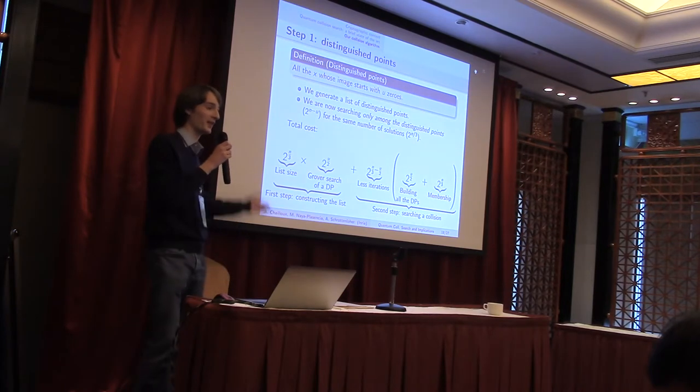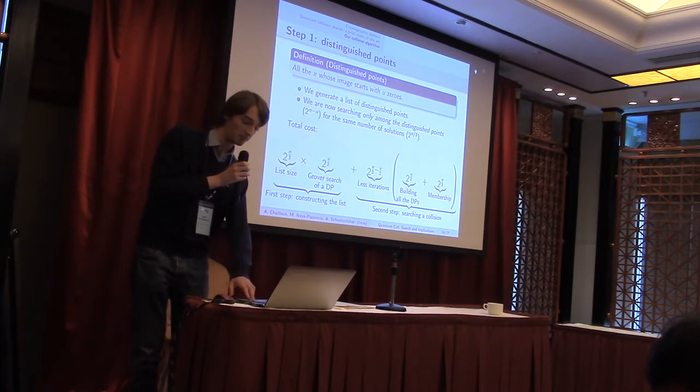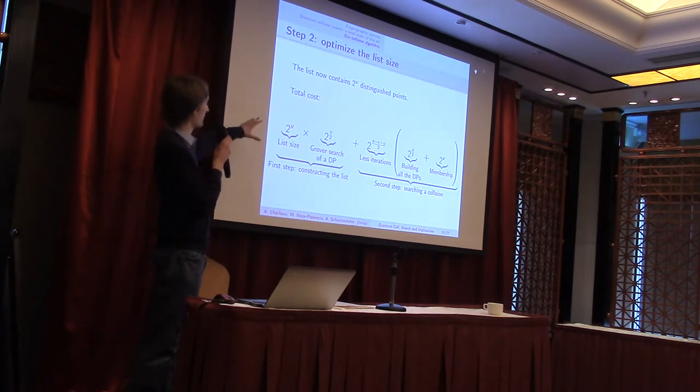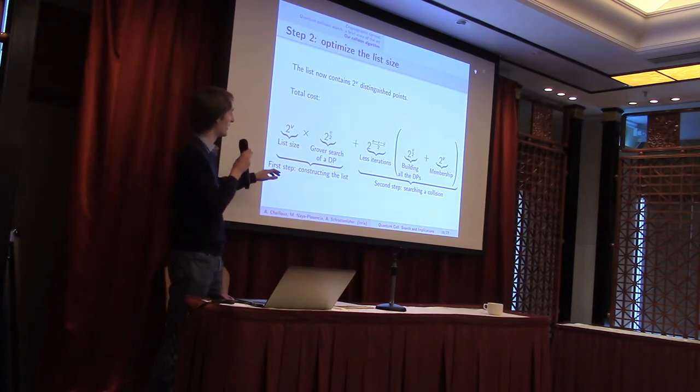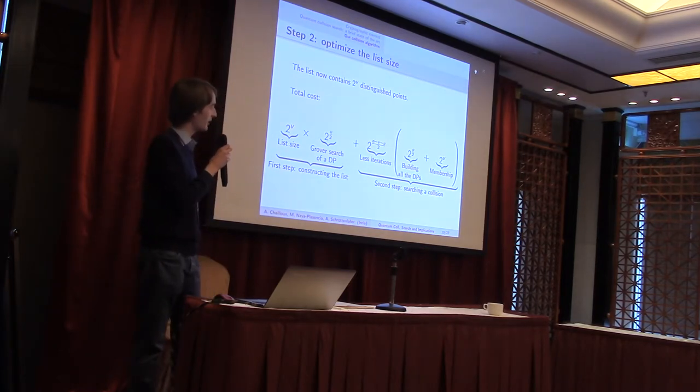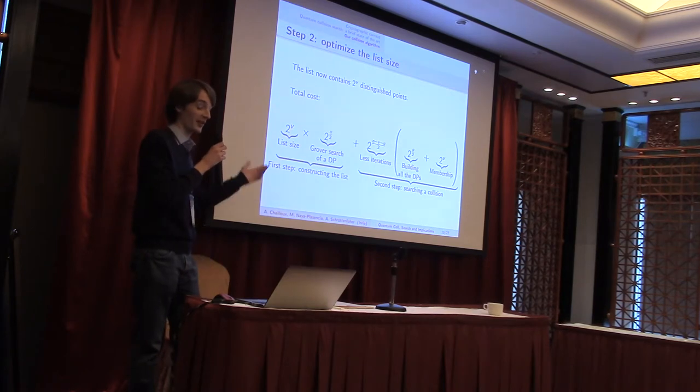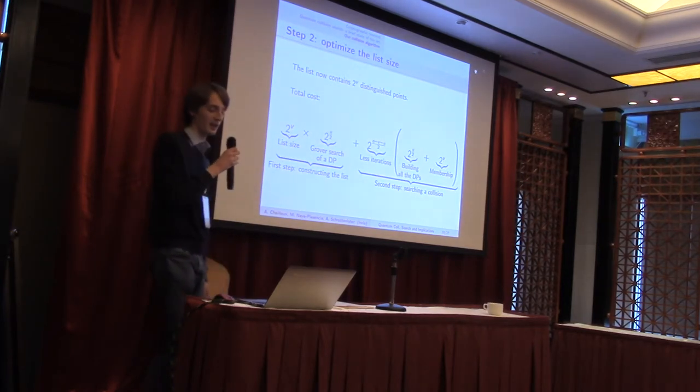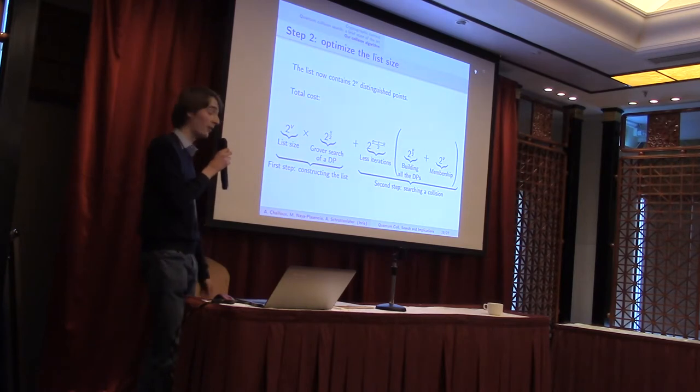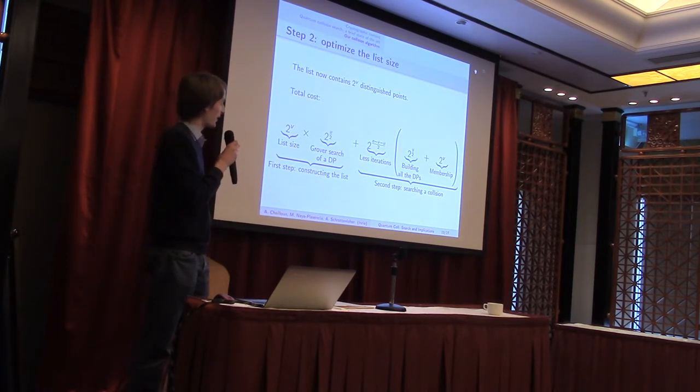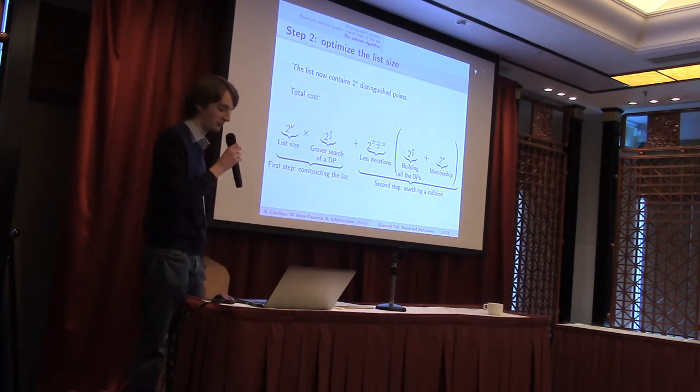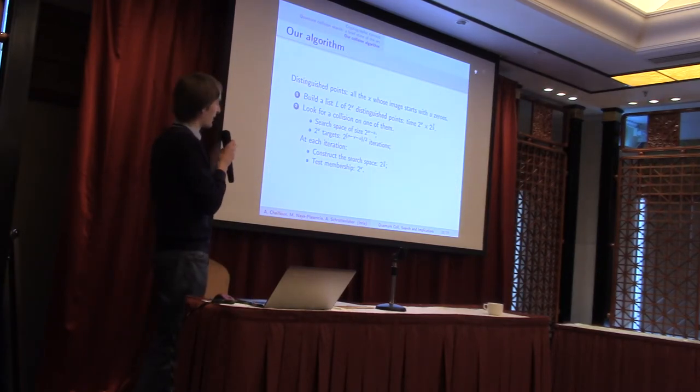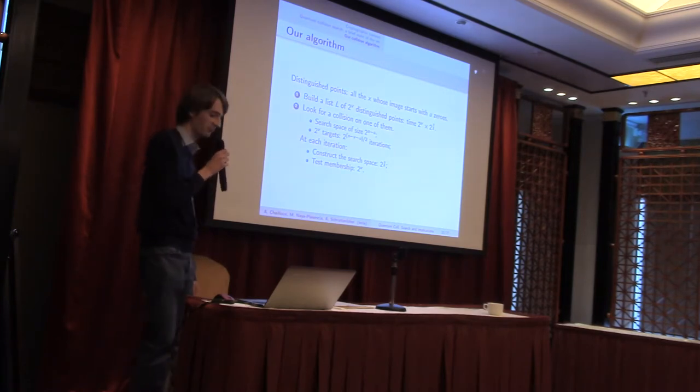Well, now that we have done that, we actually don't need the list to be of this size anymore. So, let's drop the n over 3. We take a list of distinguished points, of the size we want. First, we build the list. And then, we need to search for a collision on this list, a collision that will, of course, happen on distinguished points. So, we build the search space of distinguished points. We perform our sequential membership release to that list. And we write this into amplitude amplification. So, this is how it works. And this is how you can summarize it in a natural language.